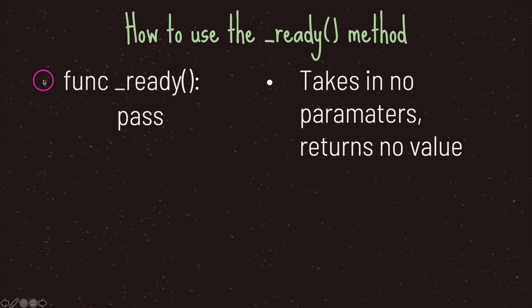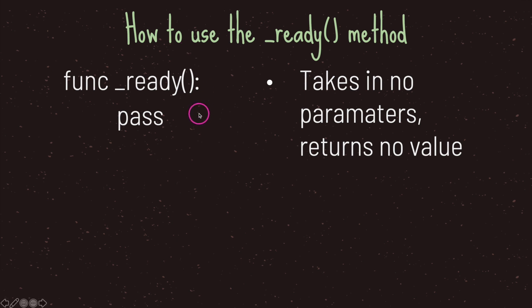To use the ready virtual method, it's fairly straightforward. First, use the function keyword FUNC followed by an underscore, followed by the word ready, and then empty parentheses. The ready virtual method does not take in a parameter nor does it return a value.